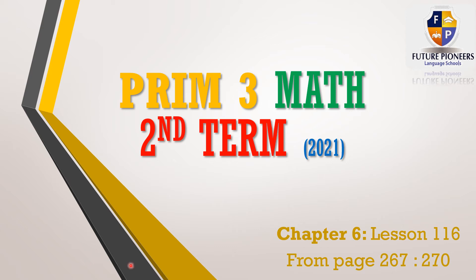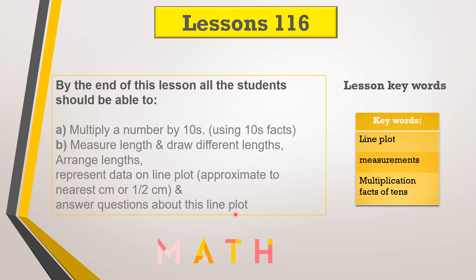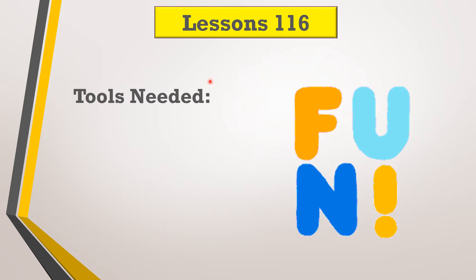Hello Primary 3, this is Chapter 6 Lesson 116. You'll find it in your booklet from page 267 to 270. At the end of this lesson you should be able to: multiply a number by tens using tens facts, measure lines and draw different lengths, arrange lengths, represent data on a line plot, approximate to the nearest centimeter or nearest half centimeter, and answer questions about the line plot. The lesson keywords are: line plot, measurement, and multiplication fact of tens.